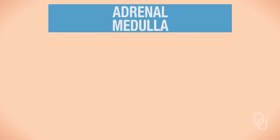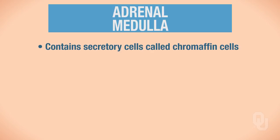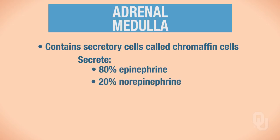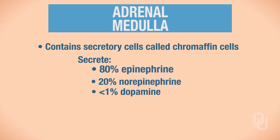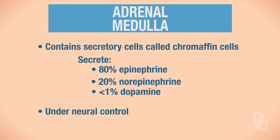The adrenal medulla is also very important within the endocrine system. It contains secretory cells called chromaffin cells. These chromaffin cells secrete epinephrine, norepinephrine, and dopamine. Since the adrenal medulla primarily secretes epinephrine, that will be our focus. This secretion is under neural control — it is the nervous system that causes or stops the synthesis and secretion of adrenal medulla hormones.